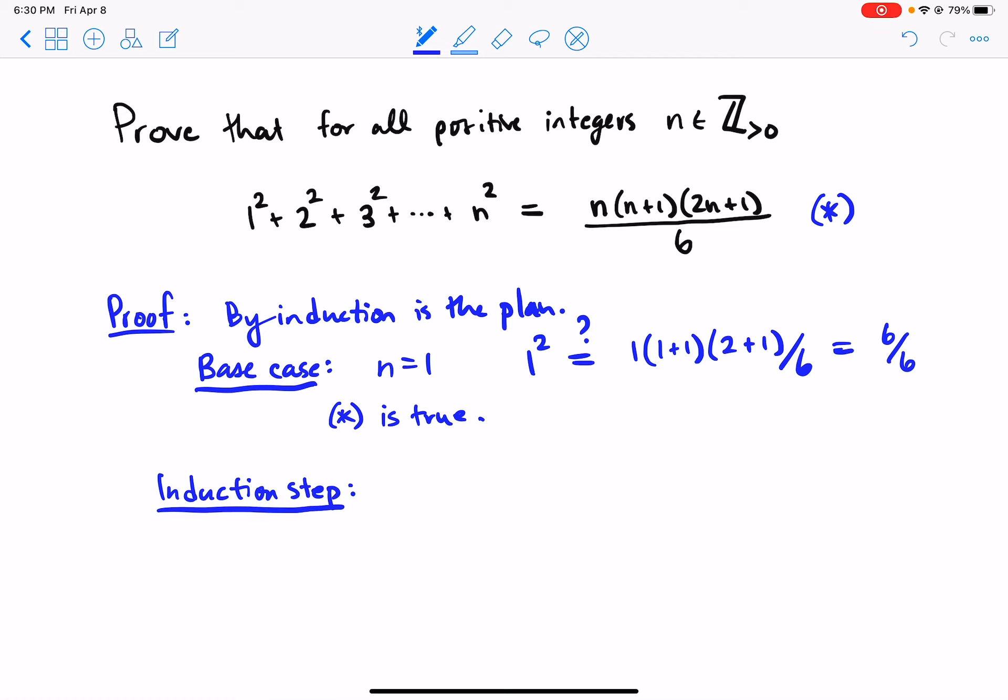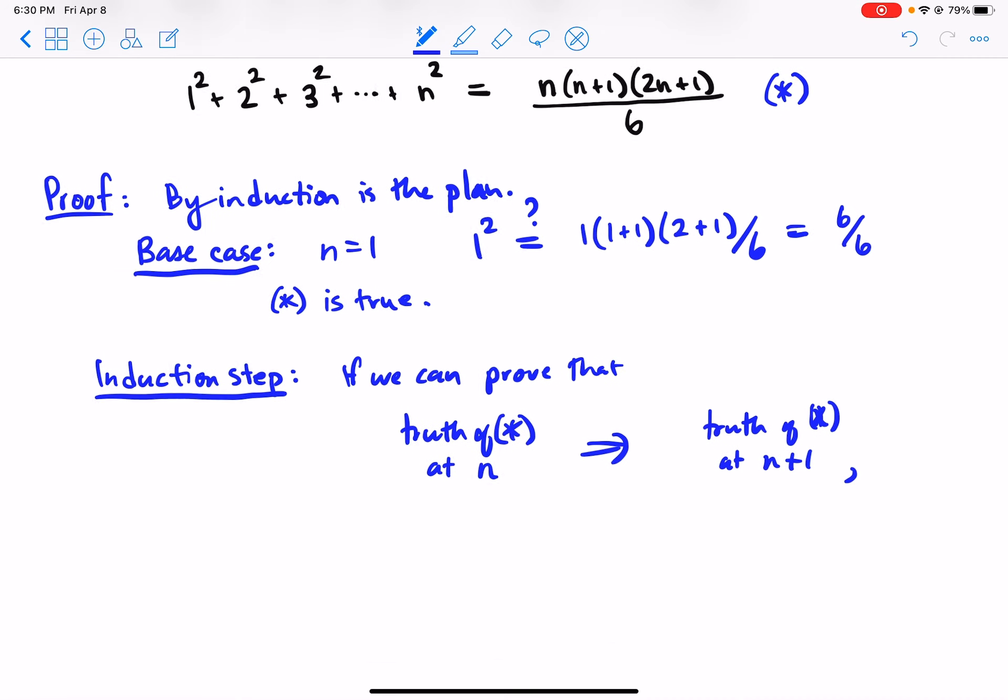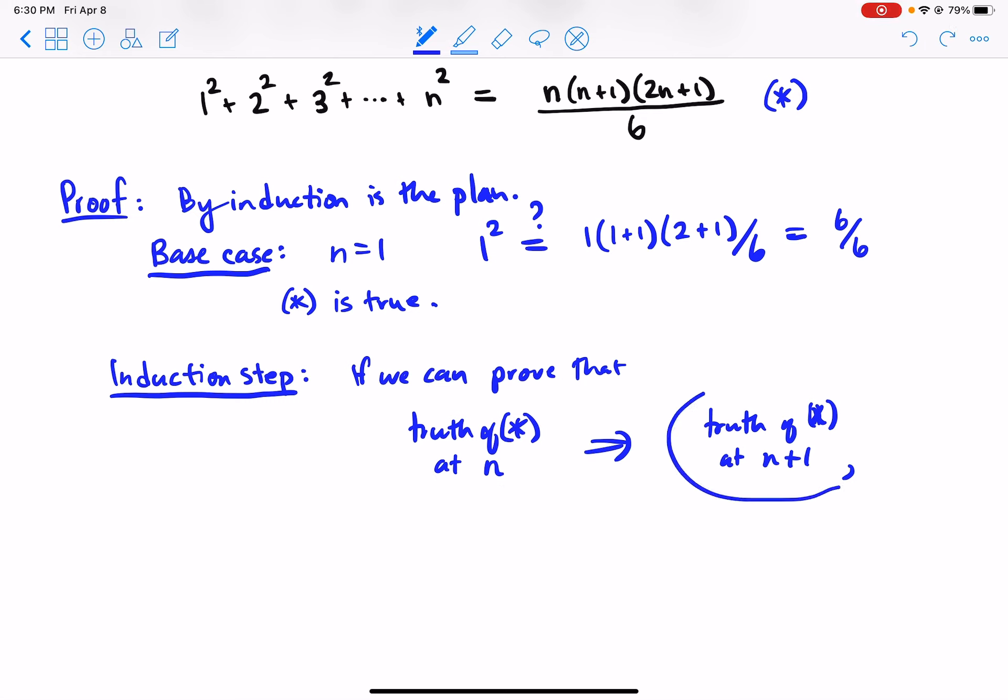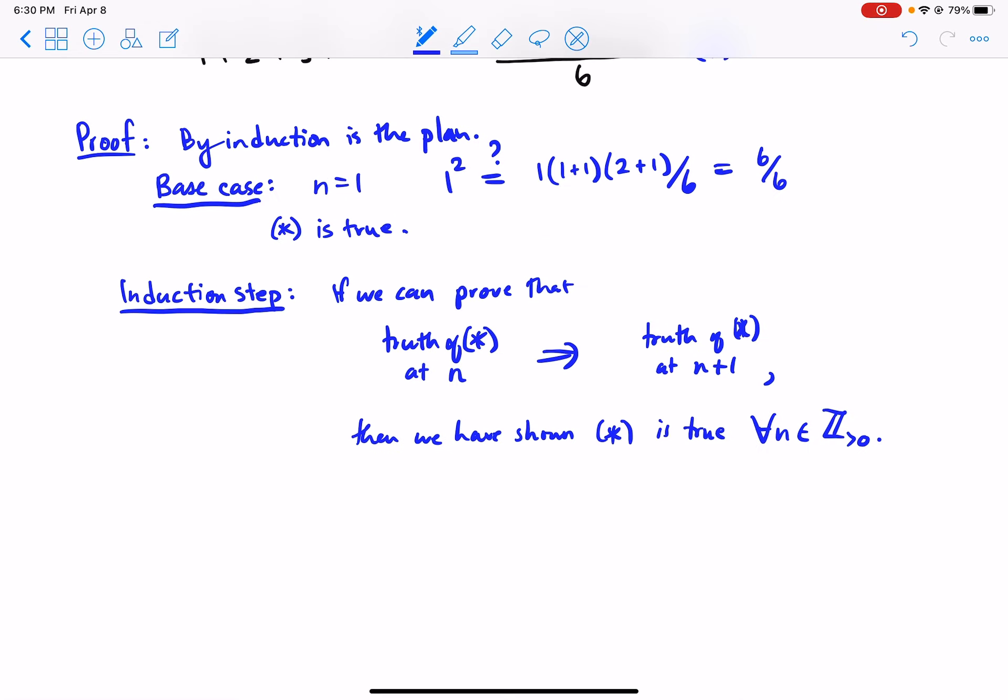Here is the induction step. If we can prove that truth of star at n implies the truth of star at the next step, truth of star at n plus 1. So if we can prove that, you know, truth at one step already implies that it has to be true at the next step, well, then we have shown star is true for all n. Okay, so let's do that.